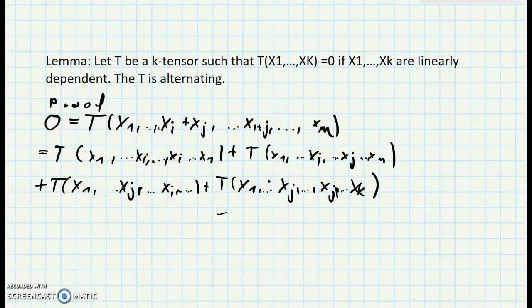Hello, we are going to prove the following lemma. Let T be a k-tensor such that T of X1 to Xk is zero if X1 to Xk are linearly dependent. Then T is alternating. I have sketched the proof here.